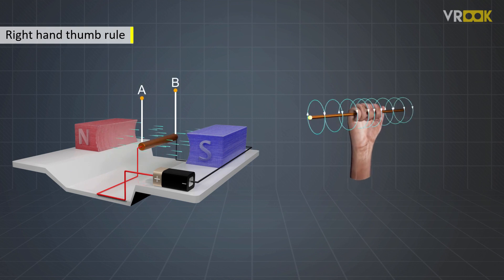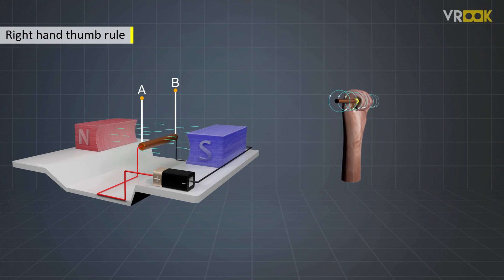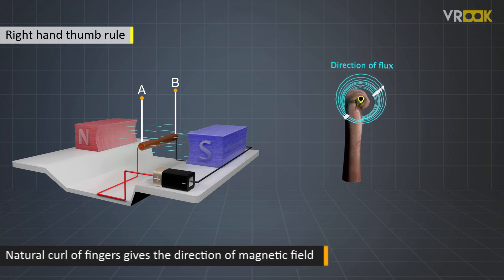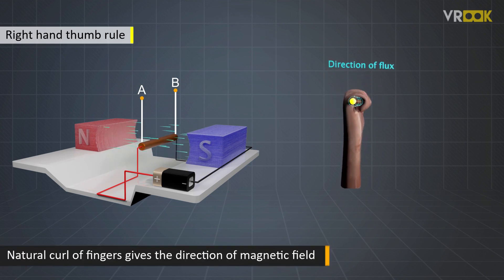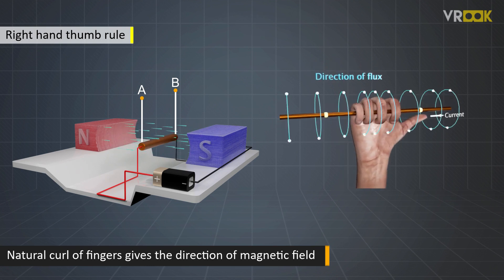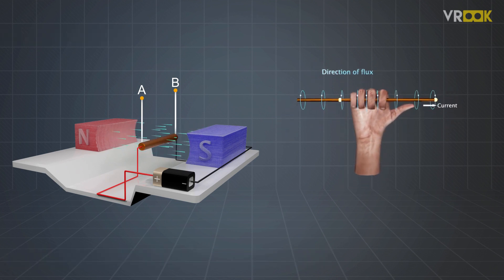According to the right hand thumb rule, we should point the thumb in the direction of the current and then the natural curl of the finger gives the direction of magnetic field. In this case, it will be clockwise.